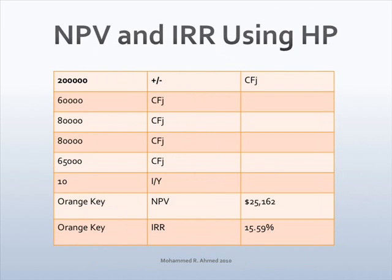Let's calculate the NPV using the HP calculator. Clear the memory and make sure payments are set to one per year. Input $200,000, press the plus/minus key, and press CFj. Input $60,000 and press CFj. Input $80,000 and press CFj. Input $80,000 and press CFj. Input $65,000 and press CFj. Input 10 for the interest rate and press I/Y. Press the orange key and NPV — the calculator displays NPV of $25,162. Press the orange key and IRR — the calculator displays IRR of 15.59%.